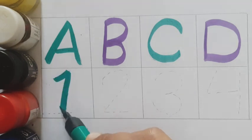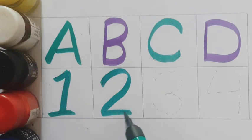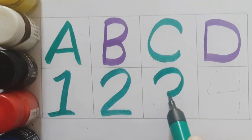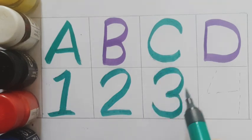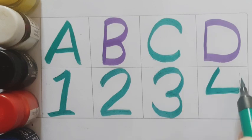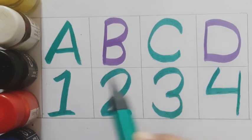Green color. Number one. Number two. Green color number three. Number three. Green color number four. Four.